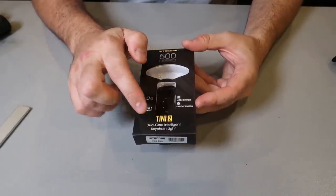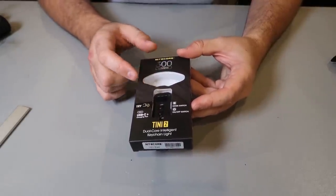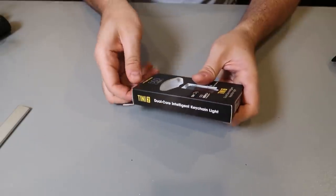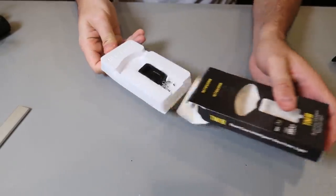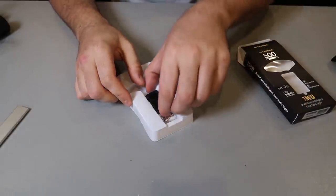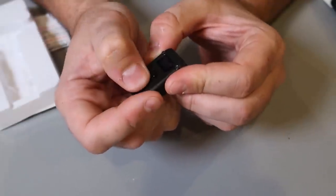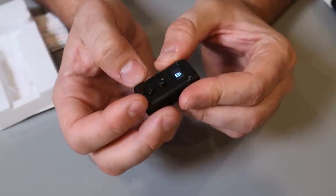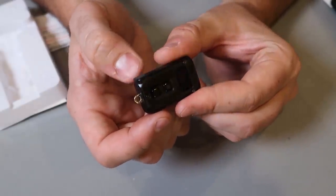Got it here, keychain light, Tiny 2. This thing is 500 lumens. And it's a really, really small flashlight. Let me show you what 500 lumens looks like. We're going to turn it on in the dark and see what it looks like. Wow, so if you press it by mistake, it's not going to just turn on automatically. You gotta unlock it.